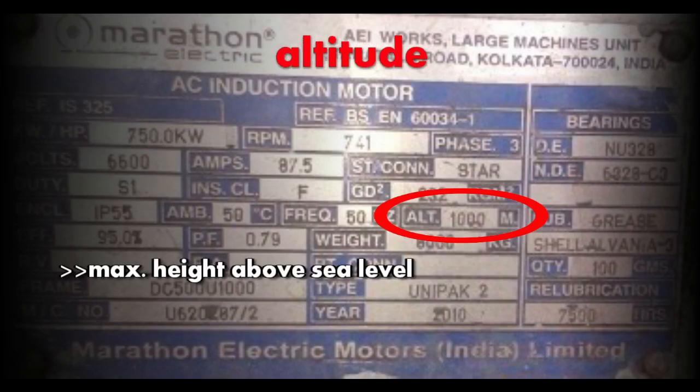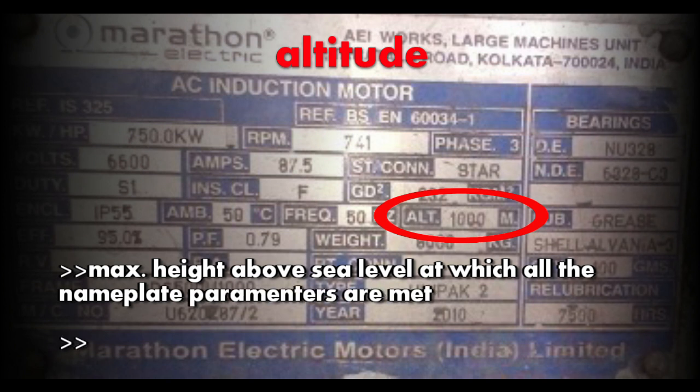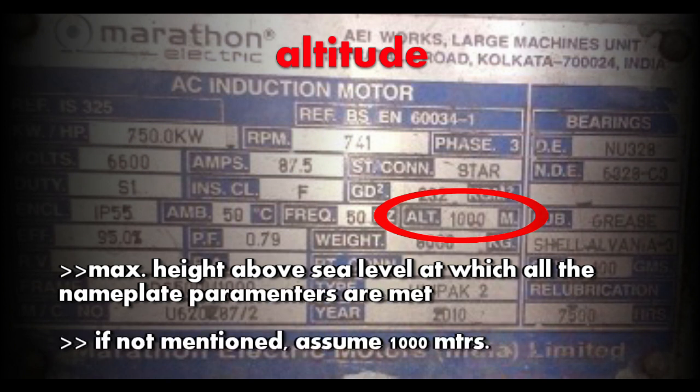Next is the altitude. It is the maximum height above sea level at which all the nameplate parameters of the motor are met. If it is not mentioned on the nameplate, then take it as 1000 meters.